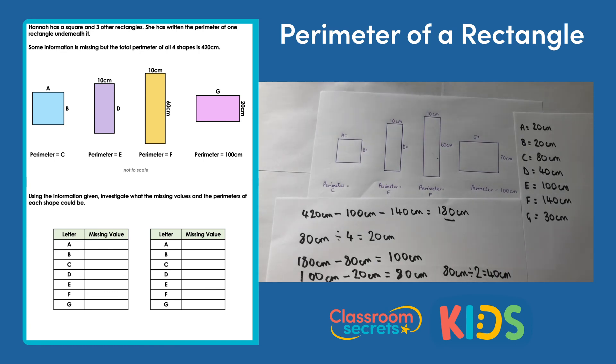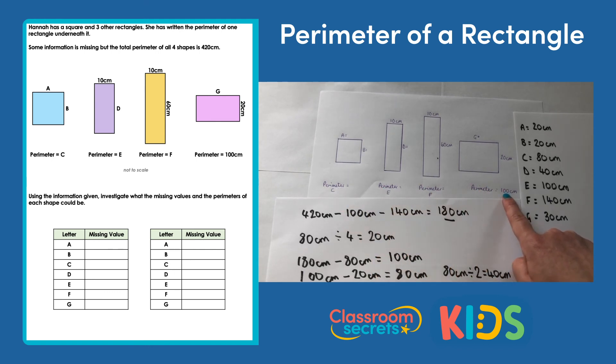As I explained before, this is one way of finding the answers to this particular question — there might be other possibilities. As long as the perimeter of all four shapes adds up to 420cm, your answer should be correct too. That was a video explaining the answers to the Perimeter of a Rectangle worksheet from Classroom Secrets. For a video tutorial on the same step, go to kids.classroomsecrets.co.uk, and for more worksheets, go to classroomsecrets.co.uk.